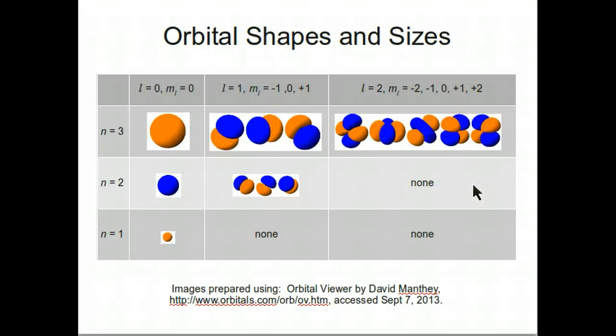S suborbitals are spherically shaped, P suborbitals are dumbbell shaped, and D suborbitals have more complex shapes. As the angular momentum quantum numbers increase, the complexity of the orbital shapes increase.